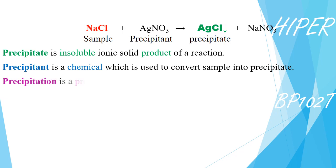And the whole process is known as precipitation. Precipitation can be defined as the process of forming precipitate. And this is the basis of precipitation titration. The sample is converted into the precipitate.